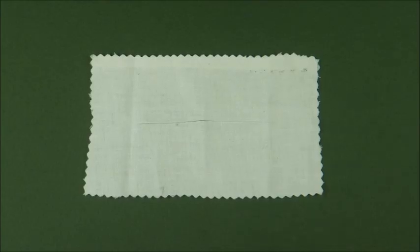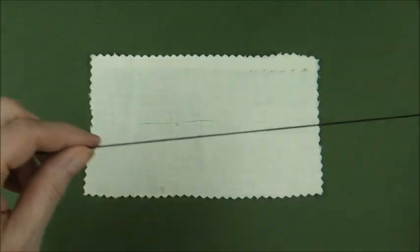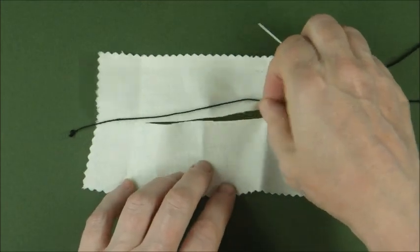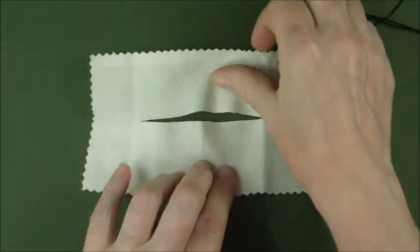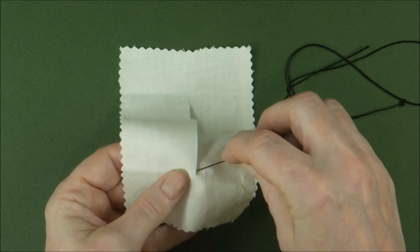As usual I'm going to be using a white fabric with a black thread just for visibility. I've tied my knot in the end and I've cut this piece of fabric and we're imagining that we're working from the patterned or furry side if we're working on a bear.